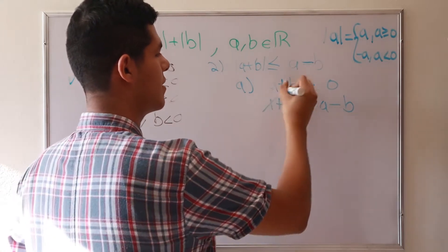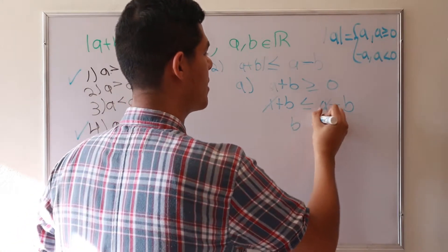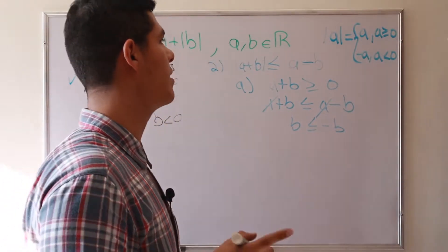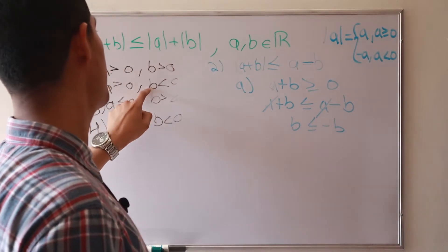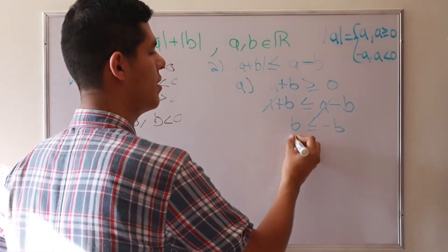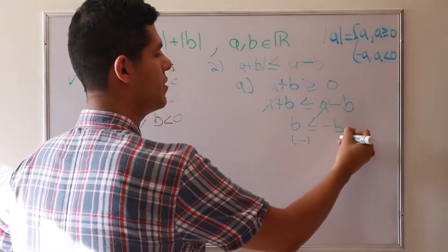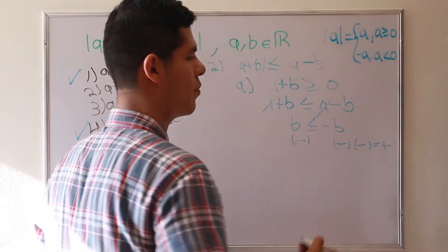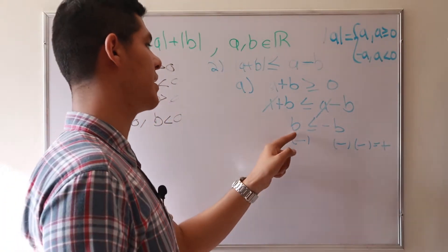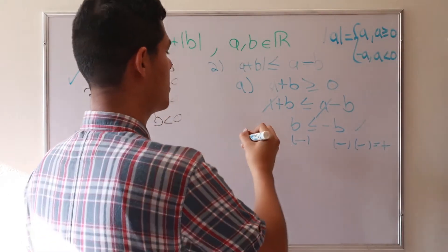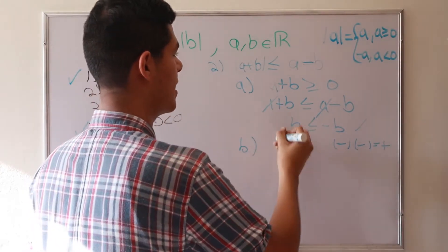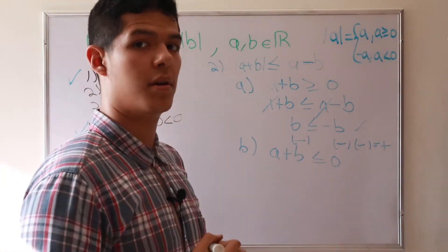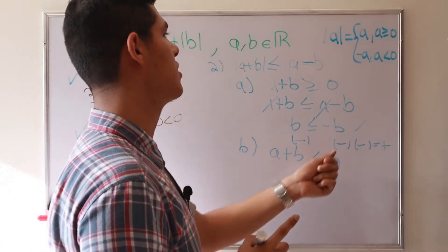The a terms cancel, and we get b is less than minus b. This is correct because b is less than zero, so b is a negative number, while minus b is positive. A negative number is less than a positive number, so this sub-case is verified.